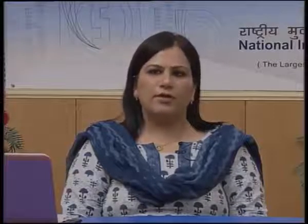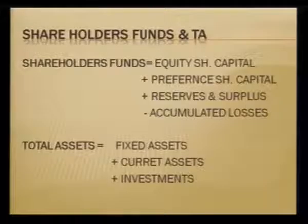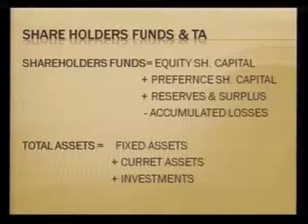You add up equity shareholders' funds, preference shareholders' funds, all profits and reserves, then deduct accumulated losses to get total shareholders' funds. Total assets means fixed assets plus current assets plus investments. Either you sum all four asset items and deduct miscellaneous expenditure, or you take only fixed assets, current assets, and investments — both ways the total assets figure is the same.